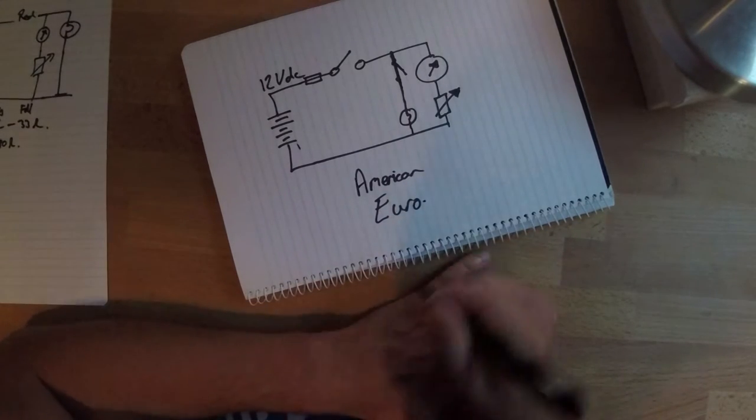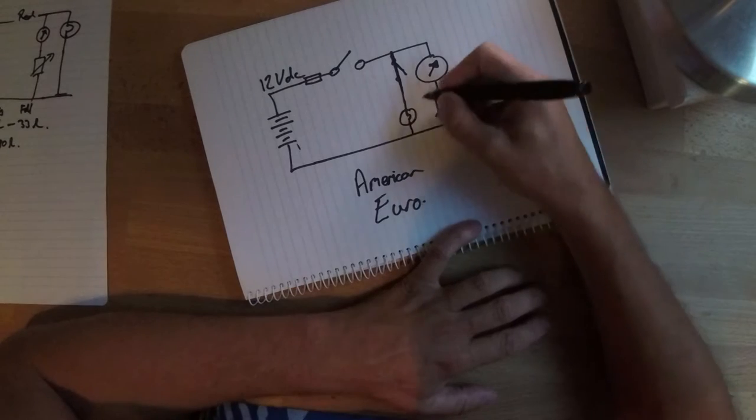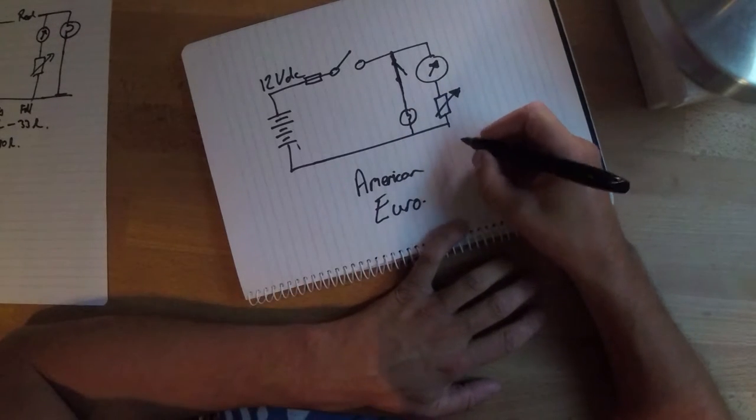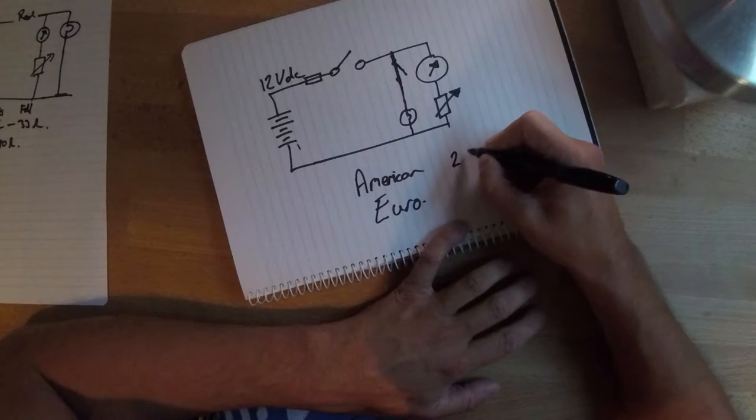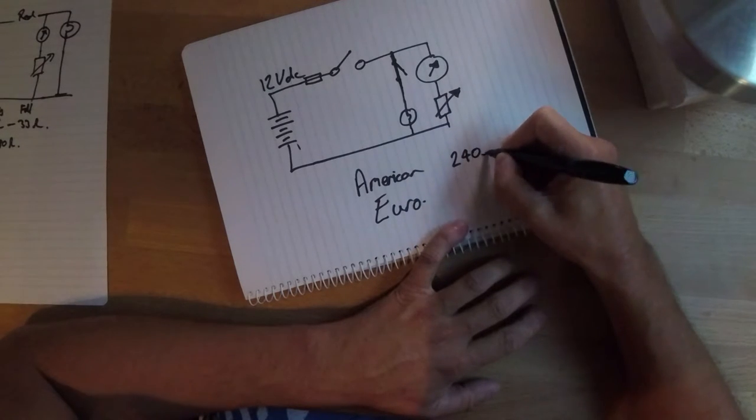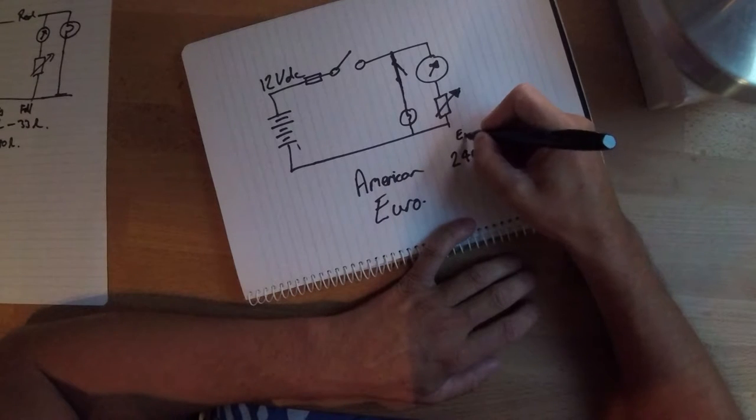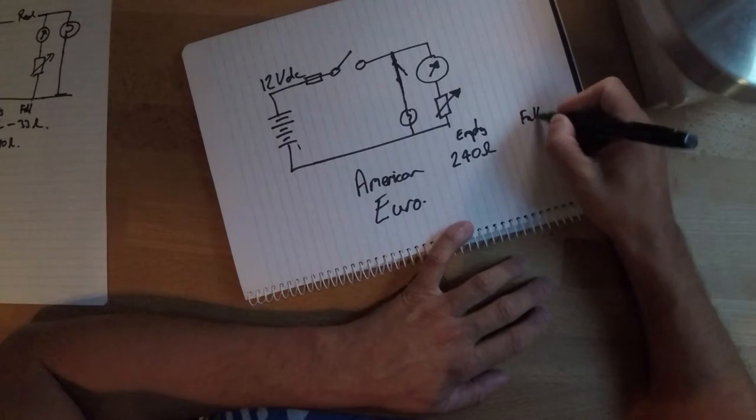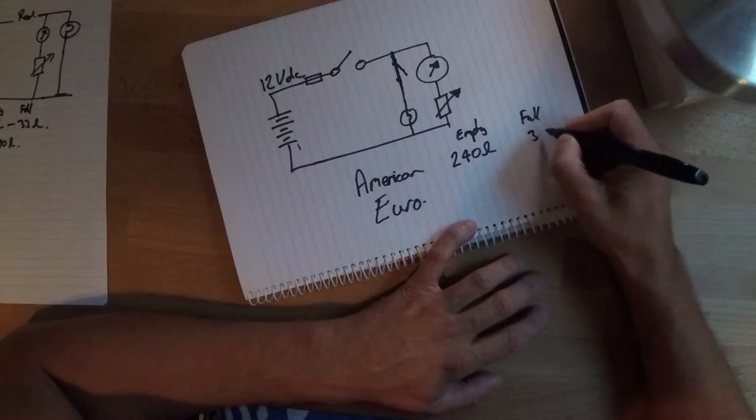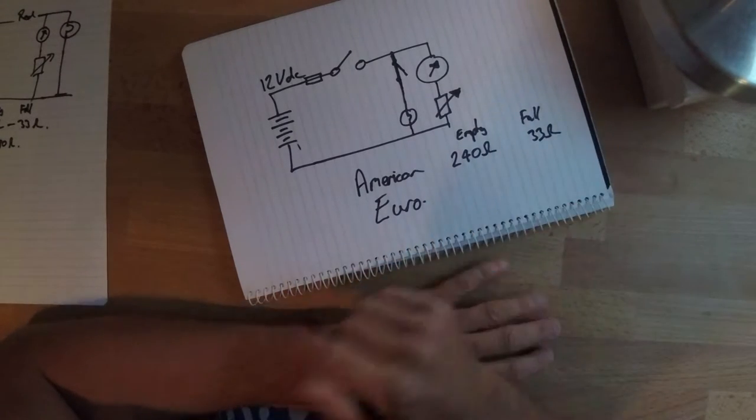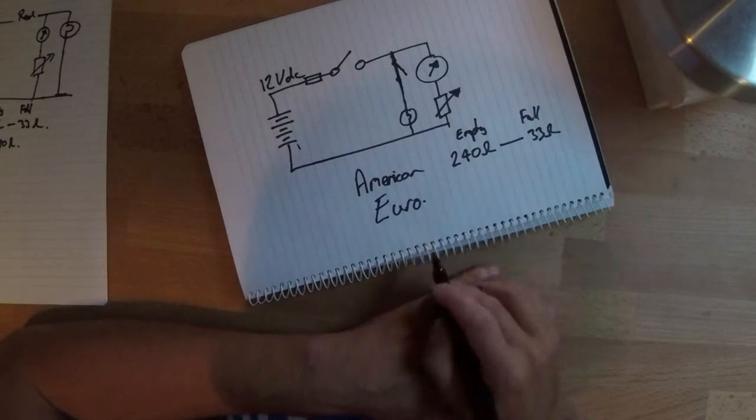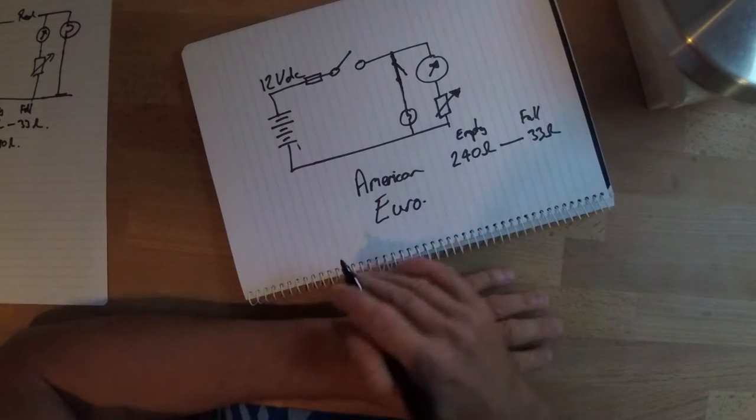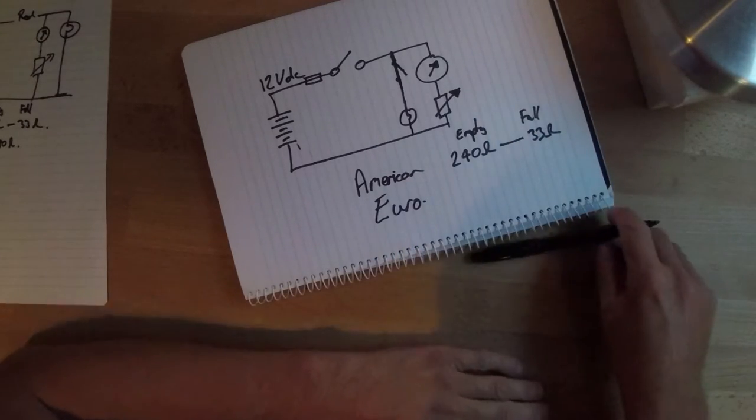Because if you mix components from one system to the other, they won't work effectively or correctly. So what does the American standard look like? Well, its variable resistor has an empty resistance of 240 ohms and a full resistance of 33 ohms. So empty 240, going in, dropping resistance, dropping to 33 ohms at full.